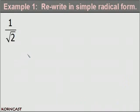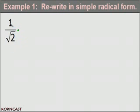In example 1, we're going to rewrite this expression in simple radical form. What we need to do is multiply this fraction by 1 — we need to change this fraction in such a way to remove this radical from the denominator, but we really don't want to change its actual value. I know that if I multiply the square root of 2 by the square root of 2, that will get rid of my radical.